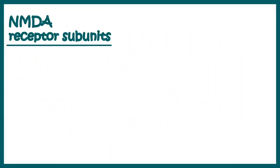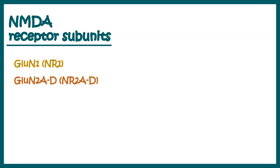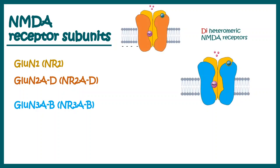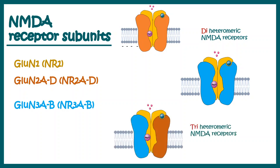NMDA receptors have multiple subunits, such as NR1, NR2A to D, and NR3A to B. They have multiple configurations, such as diheteromeric NMDA receptor configurations — in this case, at least the NR1 subunit has to be present, and the other subunits could be a combination of NR2A, 2B, 2C, etc. There could also be triheteromeric NMDA receptors, where one subunit would be NR2A to 2D, one would be NR3A to 3B, and another has to be NR1. So NR1 is the consistent subunit among all configurations.